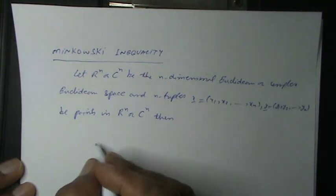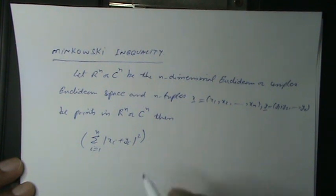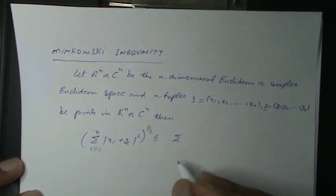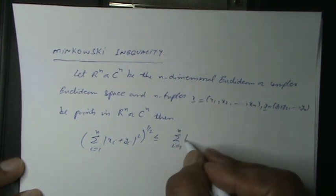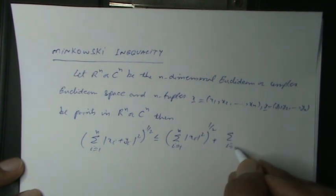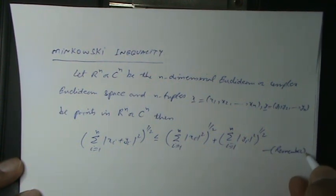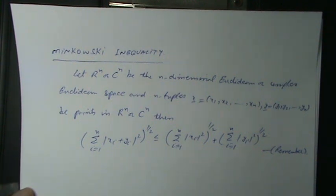Then: [Σ(i=1 to N) |Xi + Yi|²]^(1/2) ≤ [Σ(i=1 to N) |Xi|²]^(1/2) + [Σ(i=1 to N) |Yi|²]^(1/2). Remember, this is called the Minkowski inequality for N-dimensional Euclidean or Complex Euclidean Space. Proof: